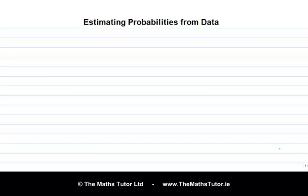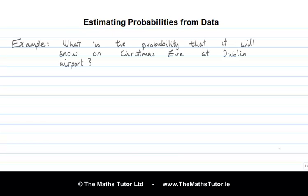In real life situations, it is often very difficult to calculate the probability of an event or an outcome based on theoretical reasoning. Let's look at an example to see what we can do in this type of situation. Suppose that we wanted to know the probability that it will snow on Christmas Eve at Dublin Airport. It is very difficult to calculate this probability based on theoretical reasoning.